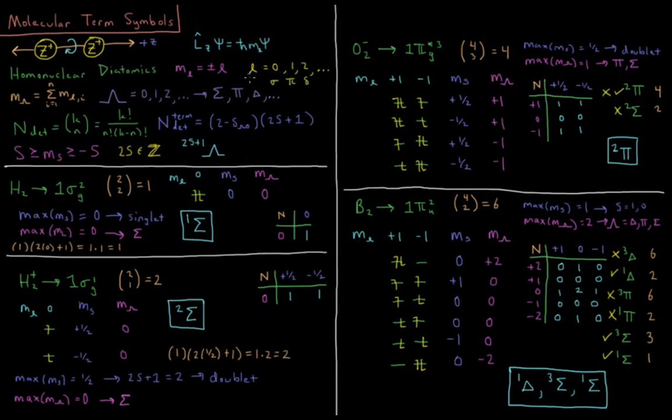So sigma orbitals have l equals zero, pi orbitals have l equals one, delta orbitals have l equals two, etc.